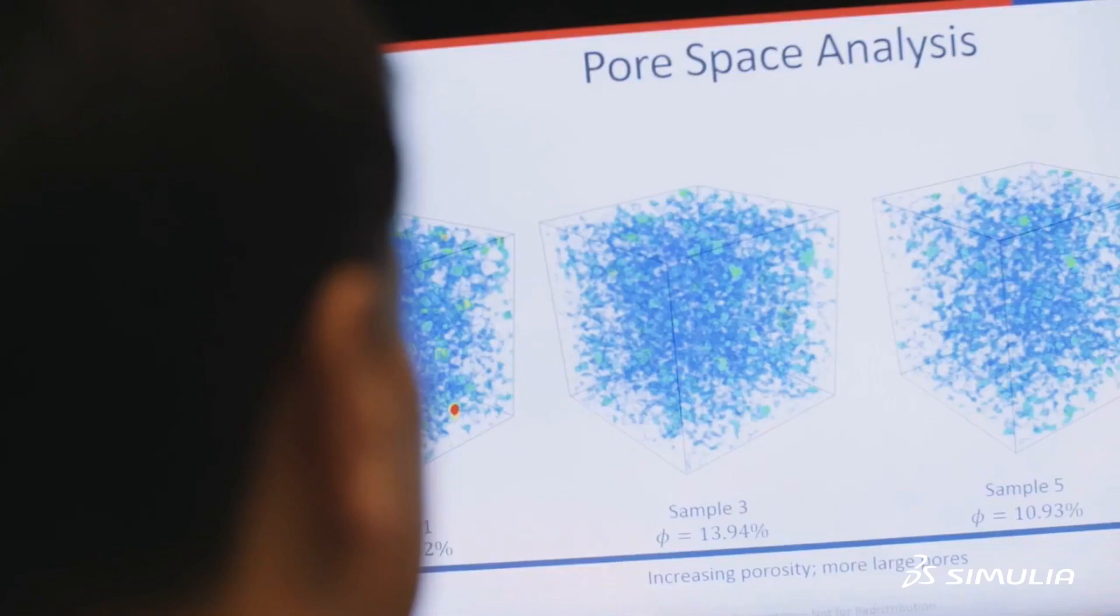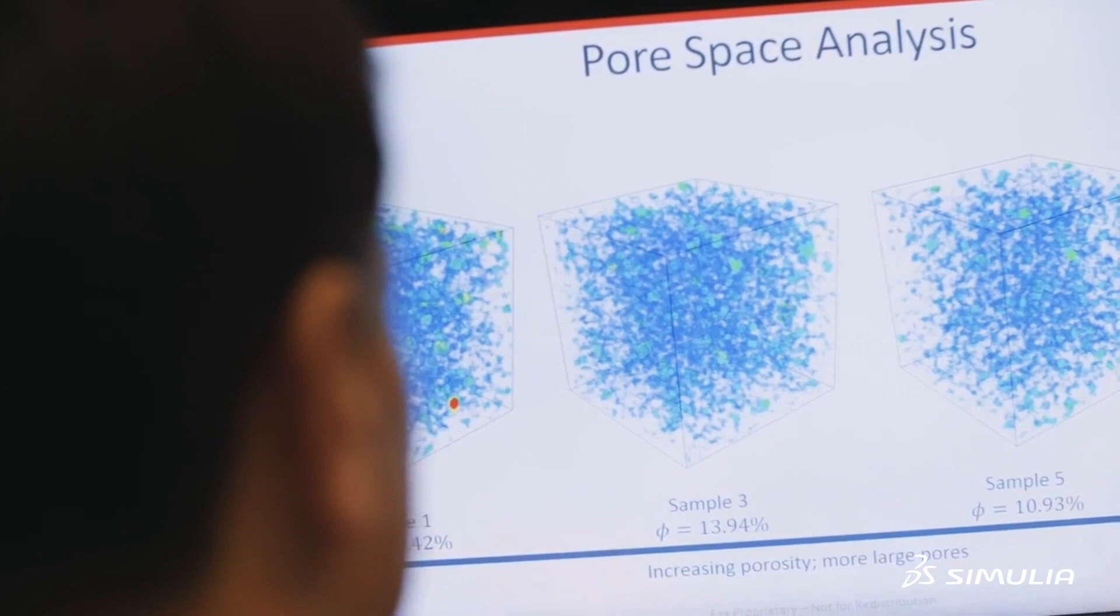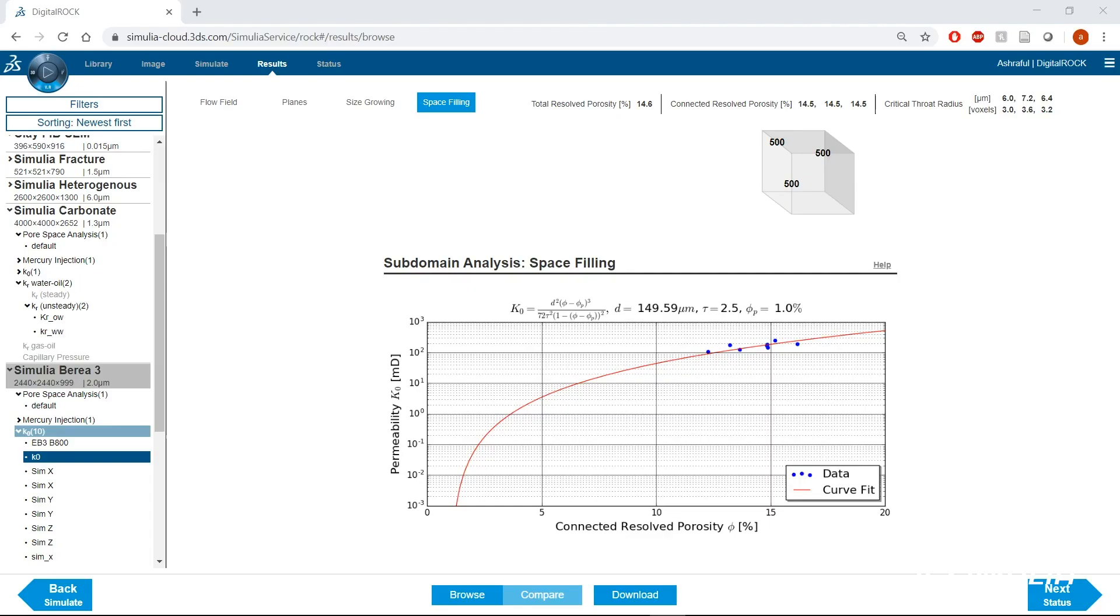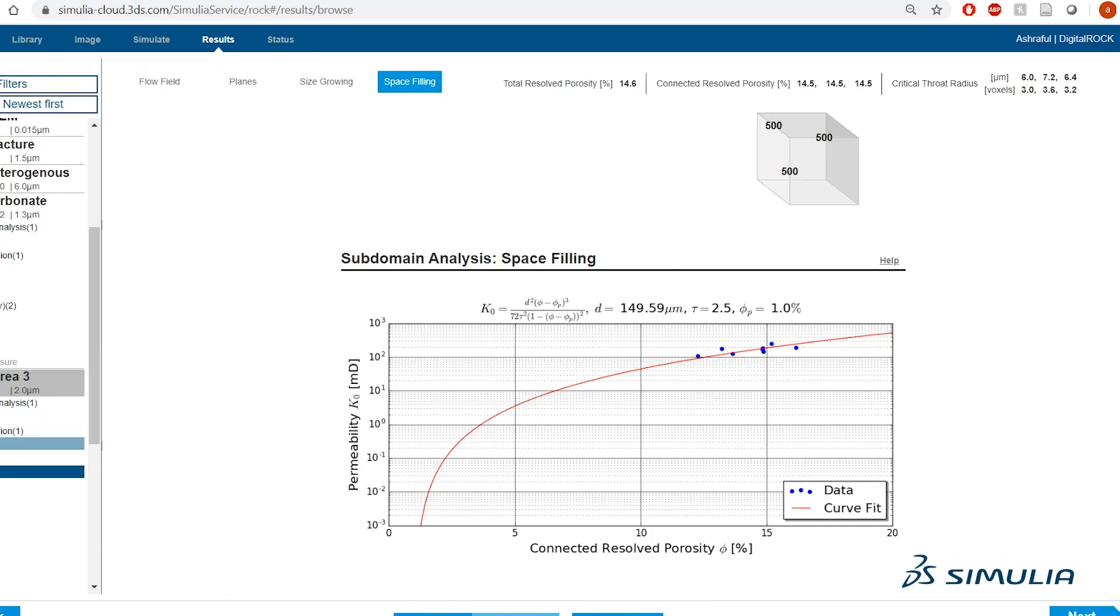By reducing the time it takes to acquire a relative permeability curve from an order of a year to an order of weeks or even days, we can analyze more samples and get even better descriptions of the different rock types in a reservoir.